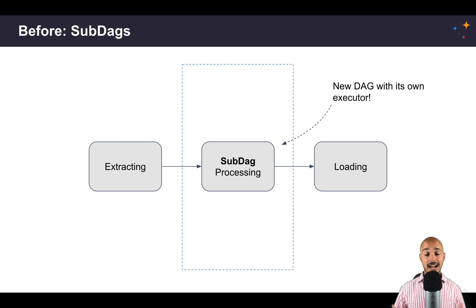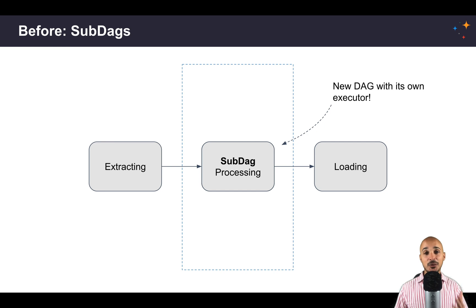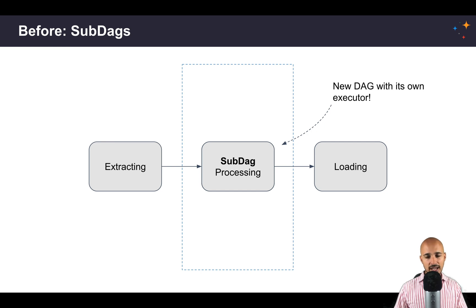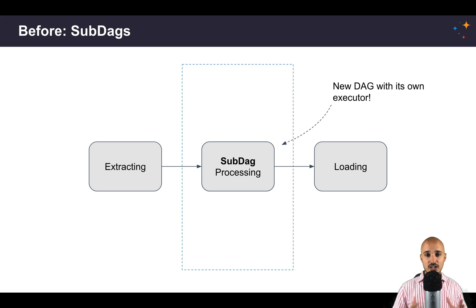Finally, sub DAGs add complexity. At first you might think you are grouping tasks only visually, but that's not the case — you are really creating a new DAG, and so you have to create a DAG factory function. So is there an easier way to just group the tasks visually, corresponding to what you originally wanted to do?